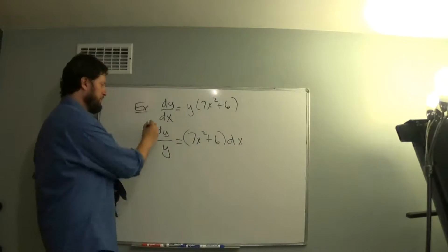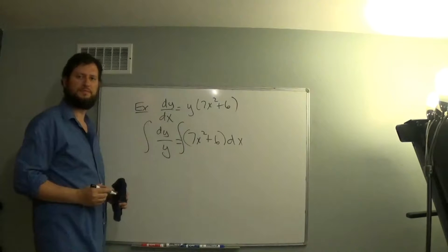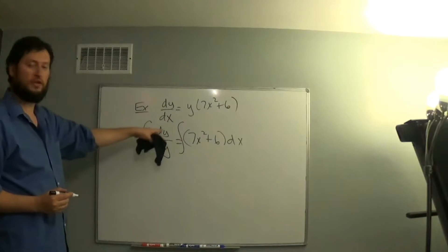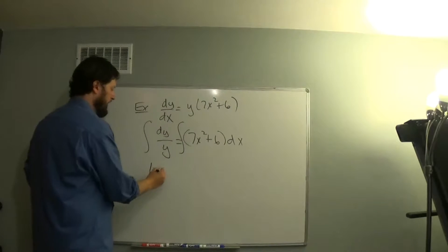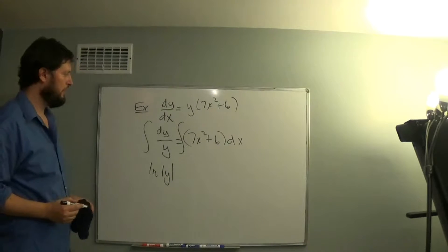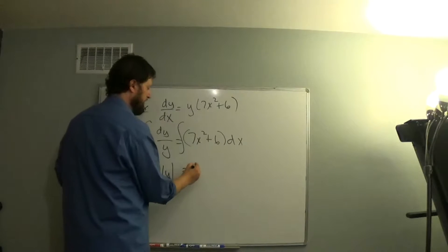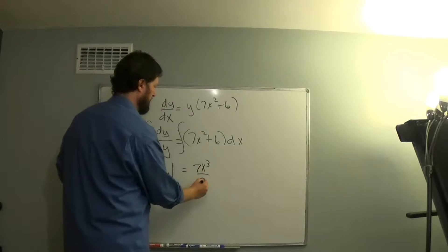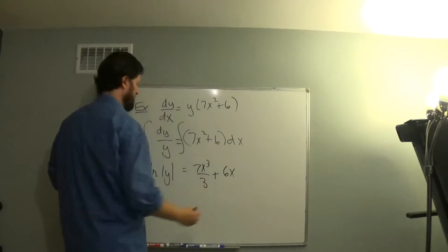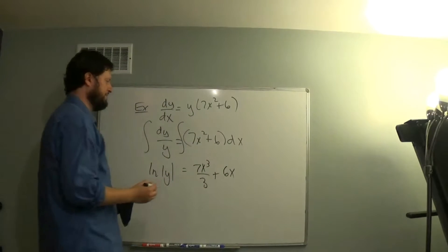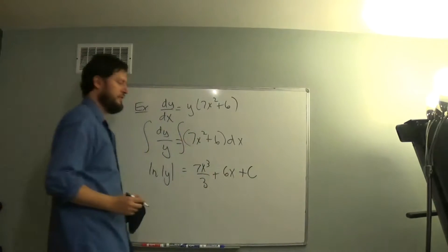Once we have things separated, we integrate both sides. Integral of dy over y is ln absolute value of y. Integral of 7x squared is 7x cubed over 3. Integral of 6 is 6x plus c.